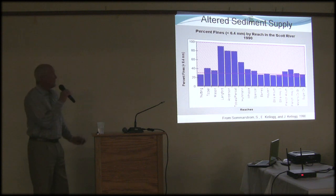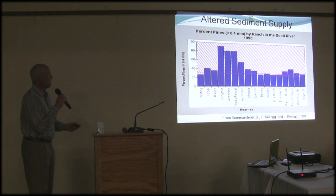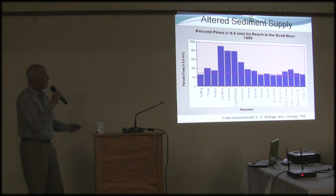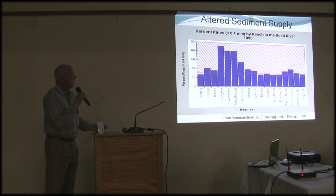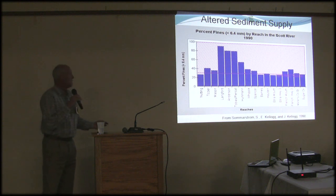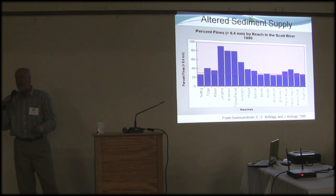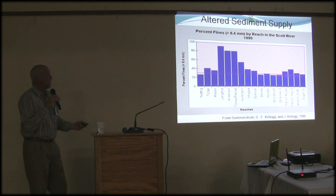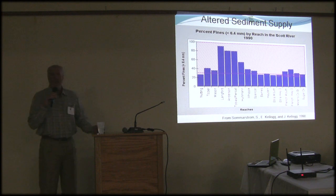Sediment supply has been altered in different ways across the landscape. Here we see an illustration of elevated fines in areas where decomposed granitics erode easily, impacting pool habitat and reducing juvenile coho habitat suitability, and also affecting spawning habitat. On the Shasta side and in the main stem Klamath, we see a reduction in coarse sediment, which is also reducing the amount of spawning habitat.